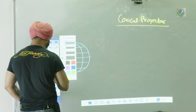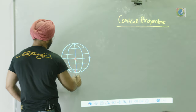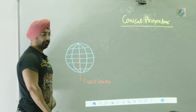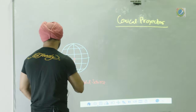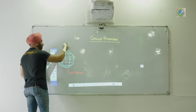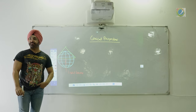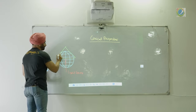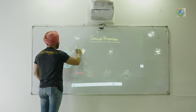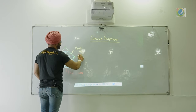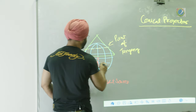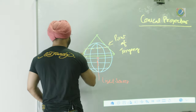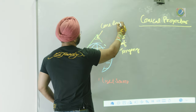So, we draw graticules, light source, and we place the sheet in the form of a cone. The sheet is touching at a particular parallel of latitude — it touches only at one place. That is the point of tangency.